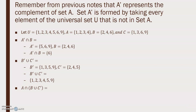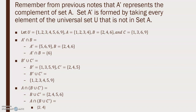Find A intersect (B' union C'). First we need B' union C' = {2, 4, 5, 6}. Then A intersect (B' union C'), looking back at set A, gives {2, 4}.